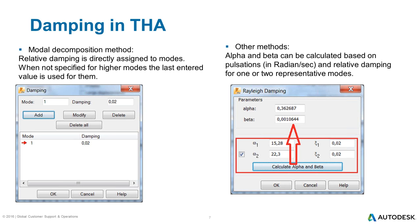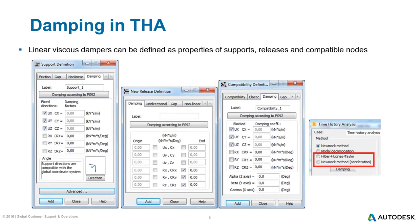For other methods, damping is calculated as a linear combination of the stiffness matrix and mass matrix using alpha and beta factors — this is Rayleigh damping. The dialog on the right-hand side allows you to calculate these factors based on pulsation and relative damping for two representative modes. Linear viscous dampers can be defined as properties of supports, releases, and compatible nodes on the damping tabs of their definition dialogues. They are supported only in the two methods of time history analysis marked on this slide. Nonlinear viscous dampers are not available in the current version of Robot.